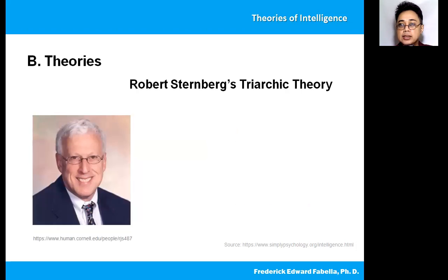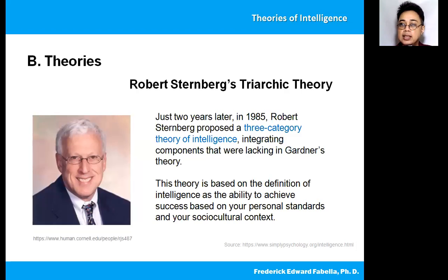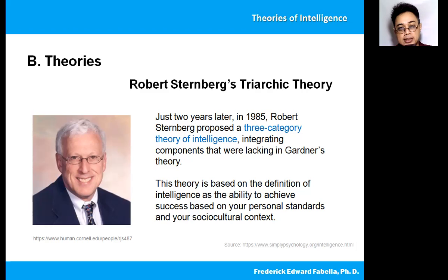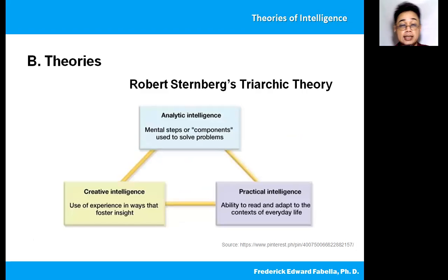Let's now go to the theory of Robert Sternberg, which he calls the triarchic theory. Just two years after Howard Gardner's theory came out, Robert Sternberg proposed a three-category theory of intelligence, integrating components that were lacking in Gardner's theory. Each theorist actually reacts to a previous theory and tries to improve upon it. This theory is based on the definition of intelligence as the ability to achieve success based on your personal standards and your sociocultural context. Intelligence is what the culture values and what helps you survive in that particular society. The diagram shows analytic intelligence, creative intelligence, and practical intelligence — these comprise the triarchic theory of intelligence by Sternberg.